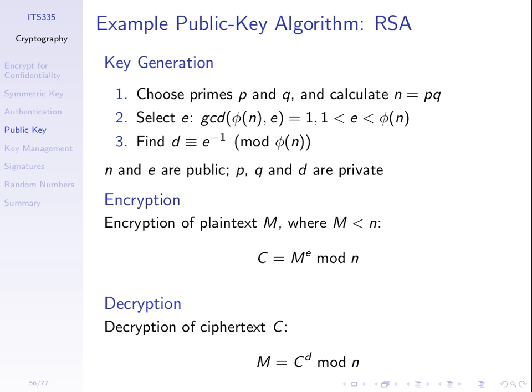N and E are public — they form your public key so anyone in the world can know those two values. D is the secret value. When you extract your public key with OpenSSL, you'll see it contains E and N. You submit that file to me and I can use those values to encrypt and decrypt. The RSA encryption equation is: ciphertext C = M^E mod N, where M is the message treated as an integer. Decryption is: M = C^D mod N — using the private value D and the same N.